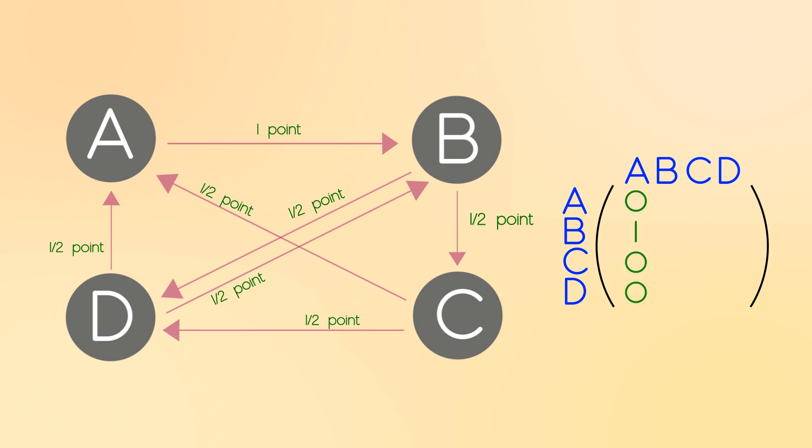The next column will be who site B linked to. They gave zero points to site A, zero points to themself, half a point to C, and half a point to D. The next column will say that site C gave half a point to site A, no points to site B or itself, and then half a point to site D. Then the final column says that site D gave half a point to A and B, then nothing to the others.